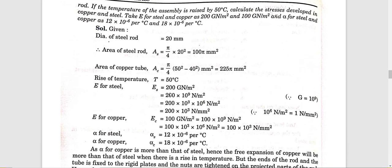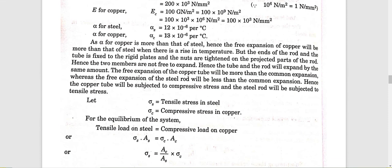E values are given in the order of 10 raised to 9 Newton per meter square. Alpha of copper is 18 into 10 raised to minus 6 per degree Celsius. Alpha of copper is more than that of steel, meaning copper expands more than steel.